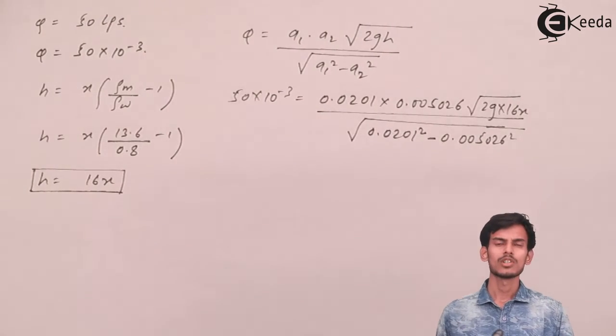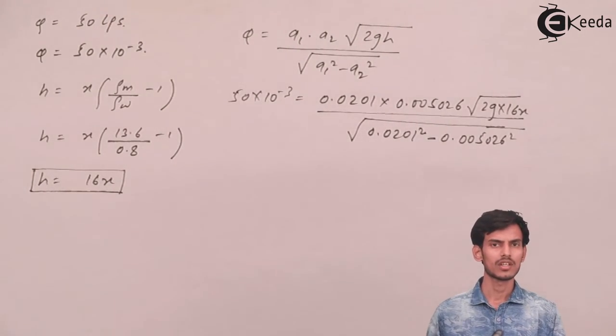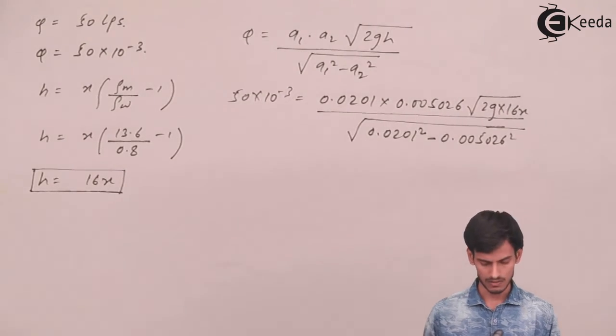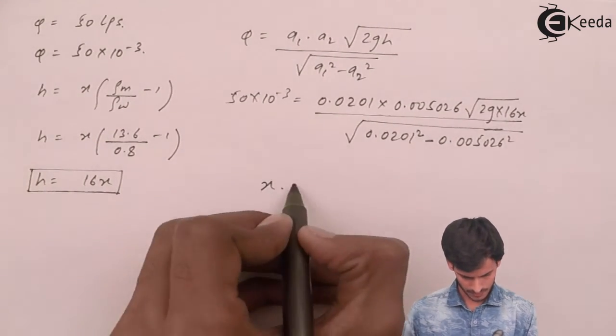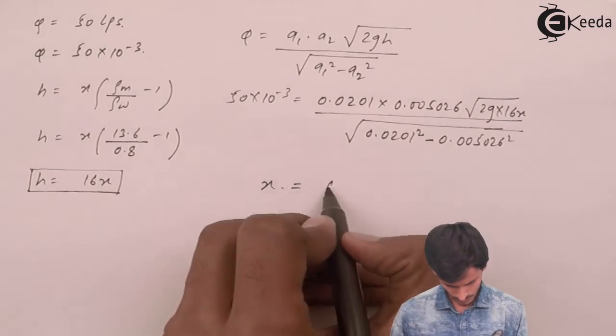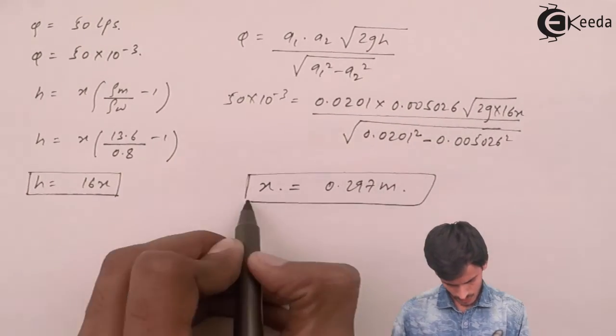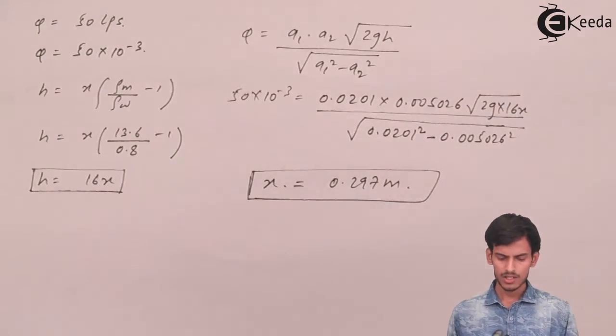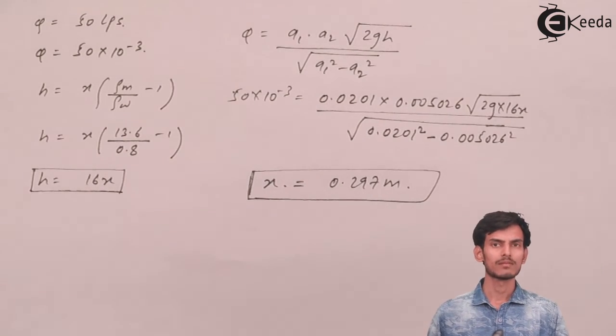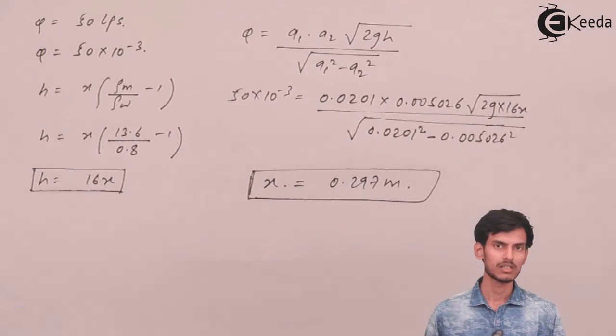We have substituted all the values in the formula, and once you rearrange the values and put them in your calculator, you will get the value of x. After substituting, the value of x comes out to 0.297 meters, which is the answer to the question.